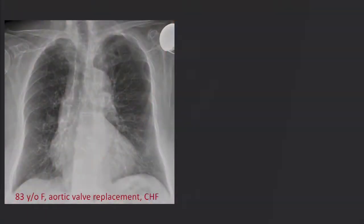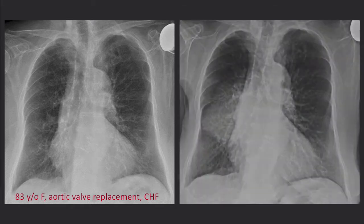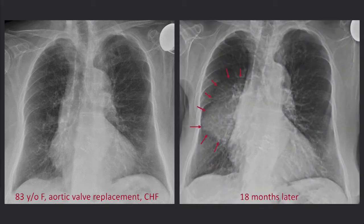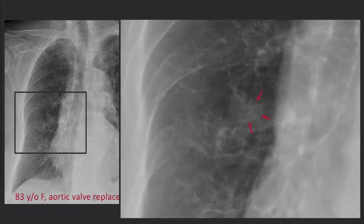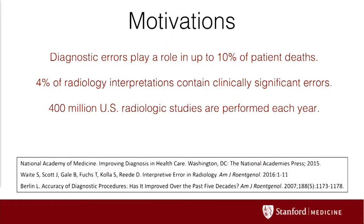I'd like to start with a clinical case. This is an 83-year-old woman who has an aortic valve replacement and congestive heart failure, and she periodically needs chest X-rays for monitoring her condition. Here's an X-ray from about 18 months later, and you can see there's a large mass projecting out of the right hilum. If you look back to the earlier X-ray, you can see there's a small nodule hiding behind a rib, behind the hilum, that was not seen by the radiologist at the time. This is exactly the kind of thing that a radiologist on their best day probably would see, and certainly if we had some of these tools available, the radiologist would be able to identify this mass. So that's really our motivation — diagnostic errors play a role in a large number of patient deaths.